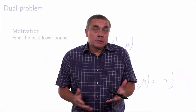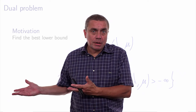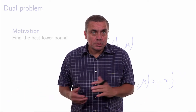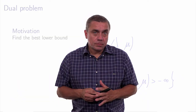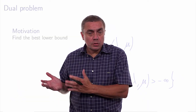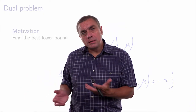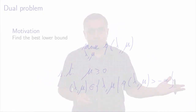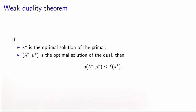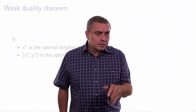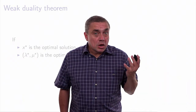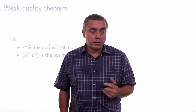The solution of the dual problem is also a lower bound on the primal — in fact, the best lower bound. The result that the optimal value of the dual problem is a lower bound on the optimal value of the primal problem is called the weak duality theorem. It states that if x* is the optimal solution of the primal and (lambda*, mu*) is the optimal solution of the dual, then the optimal dual value is a lower bound on the optimal primal value. This plays an important role whenever we need bounds on the optimal value of an optimization problem.